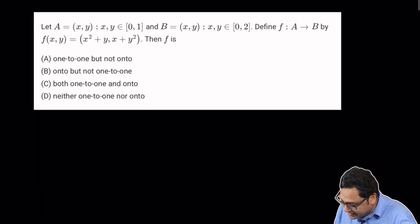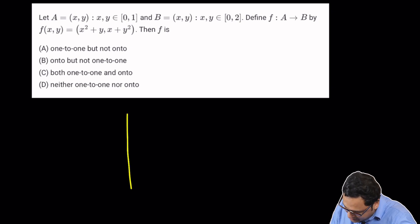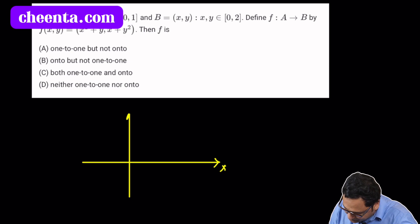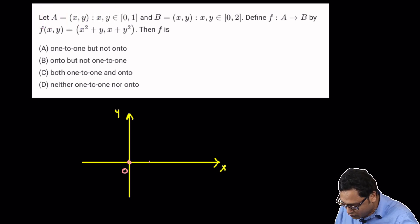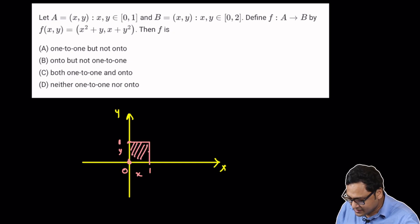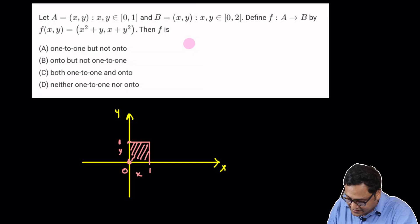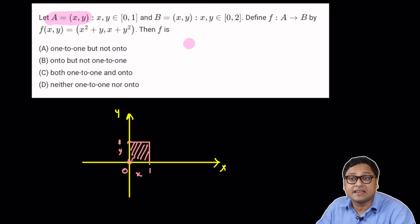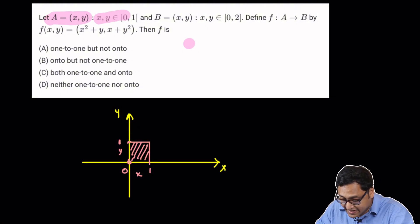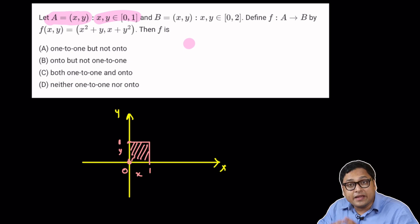So if I draw A, I'll draw x axis and y axis. And I'll take 0, 1. This is along the x axis and 0, 1. This is along the y axis. Then this square with the boundaries is the domain of the function. A contains x, y such that x is between 0 and 1 and y is between 0 and 1. So this is the domain of the function.